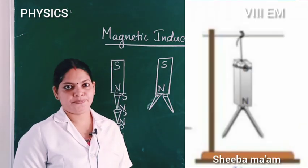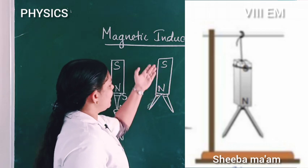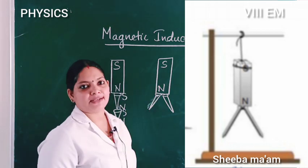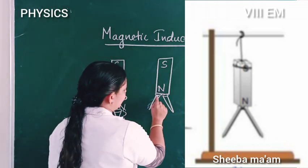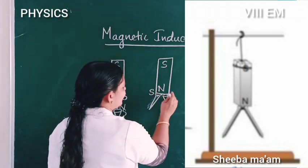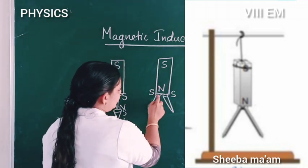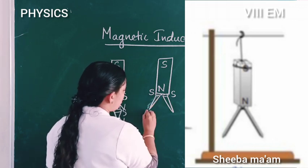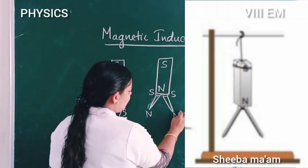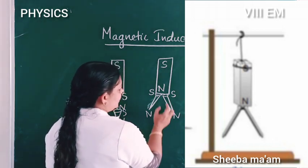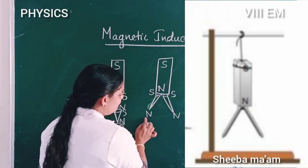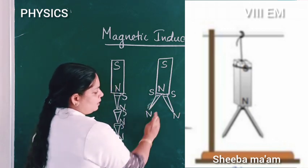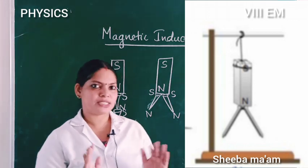Look at the next figure. This next figure shows a magnet from south and north. These two pins attract. This is north, this is north — like poles are here. This end is south, this end is north, this end is north. Like poles repel each other.